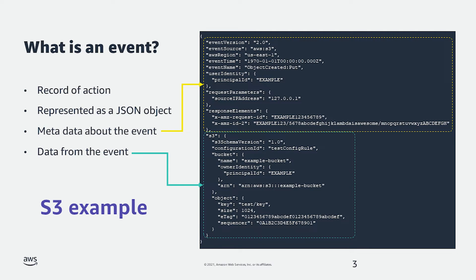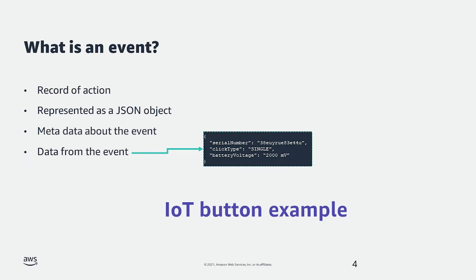Another example would be someone pushing an IoT button. The event will contain information like when the button was clicked, the type of click — single, double, or long click — and maybe the location of the button. Events can come from many different sources and can look very different from each other.